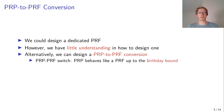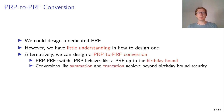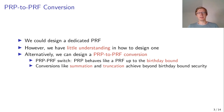The most straightforward way to do this is simply using a PRP directly as a PRF, which is known as the PRP-PRF switch. We know that a PRP behaves like a PRF up to the birthday bound. But if we want beyond birthday bound security, we can also do some more sophisticated stuff like summation or truncation, and it turns out that these constructions also achieve beyond birthday bound security.